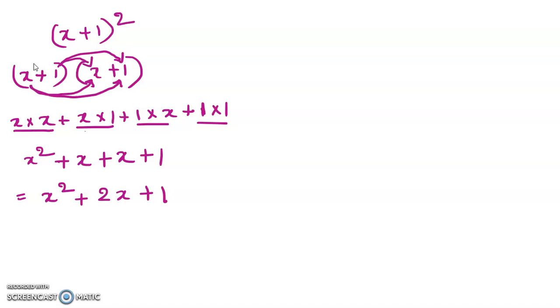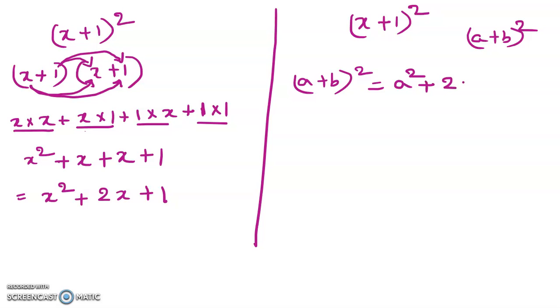This can be done in another way. (x+1)² looks like (a+b)². We know (a+b)² equals a² + 2ab + b². So instead of a and b, we have x and 1.